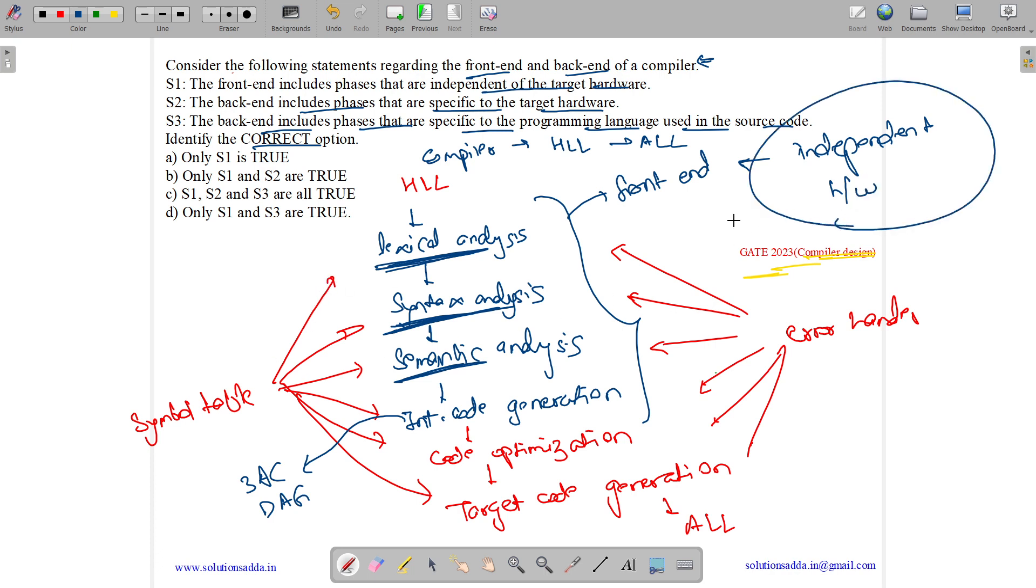And we can take the front-end of a compiler and we can basically apply the backend in different types of hardware. Like we can do this part in one machine and the rest part in another machine. But this is called the backend of compiler - the code optimization and target code generation.